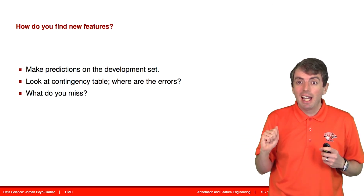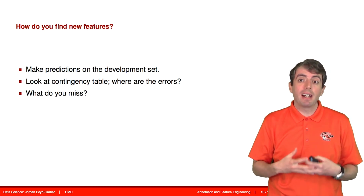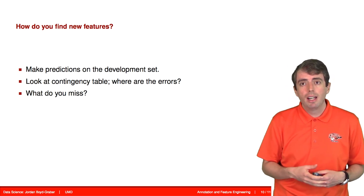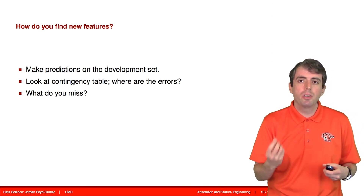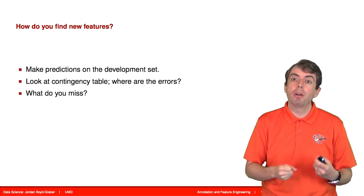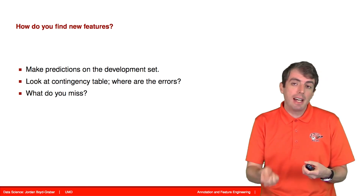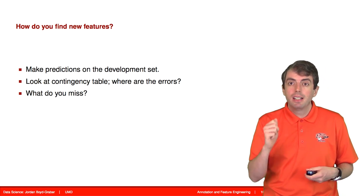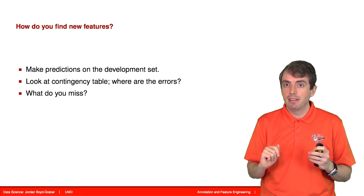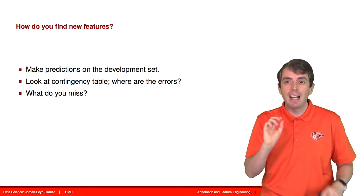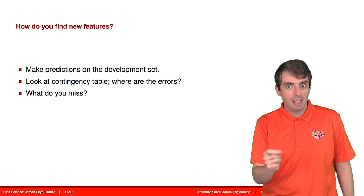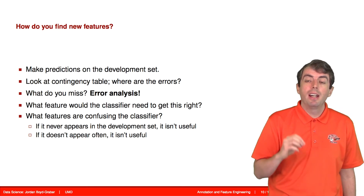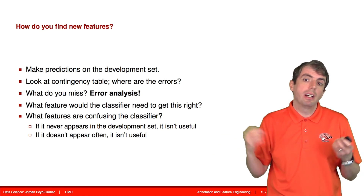Thus far, we've talked about features that I've thought up — and they work, which is good. But how do you, in your homework, actually go about discovering these features? One thing you want to do is look at the cases where your algorithm is getting things wrong, and try to figure out: is there a rule, is there a feature I could write to allow my algorithm to get this right — to expose something about this data point it could latch onto in the future? If you're able to write that feature, you can code it up and see what happens. Maybe it doesn't get it right; you can look at the feature values and say, 'I'm capturing examples I didn't think I would — let me refine my feature to better capture what I want.' This process is called error analysis, and it's important to make sure you're capturing the examples your algorithm is getting wrong and creating new features to account for those.